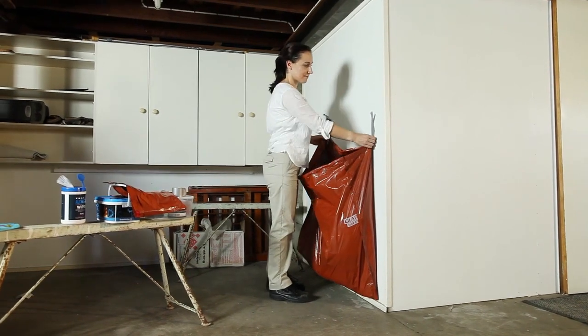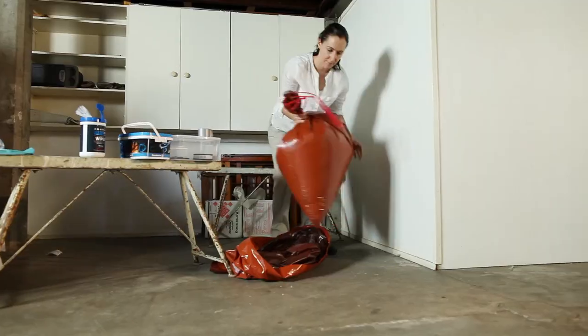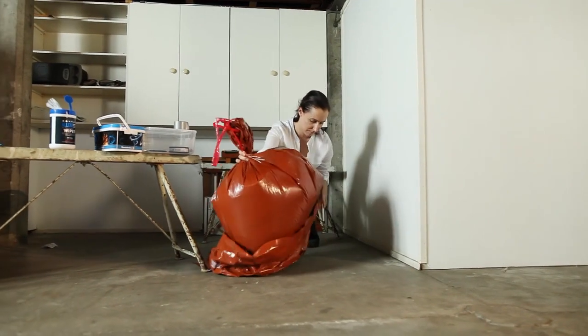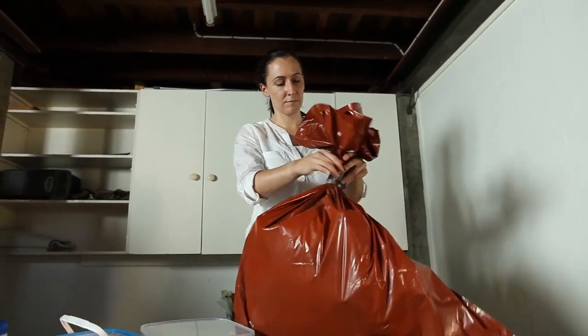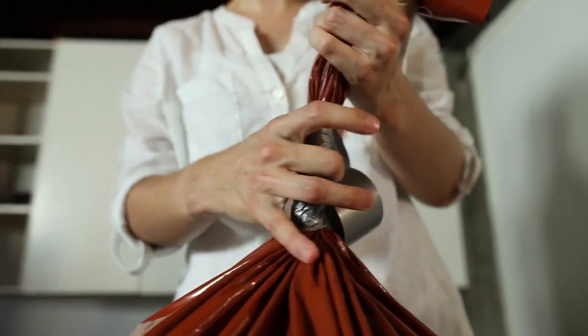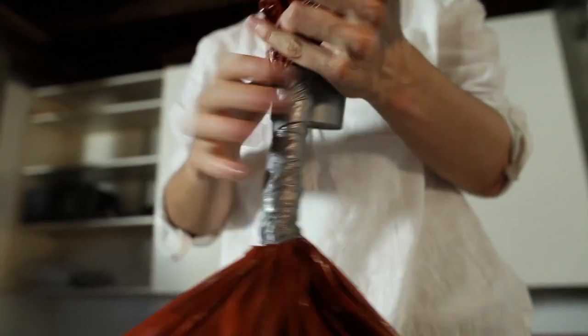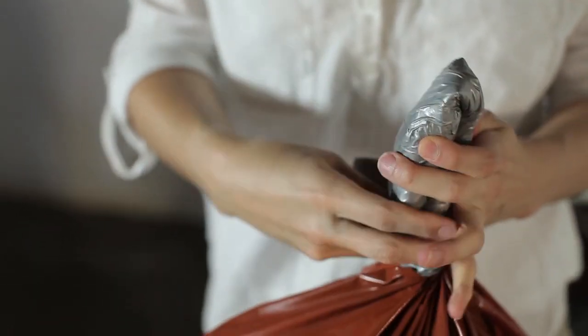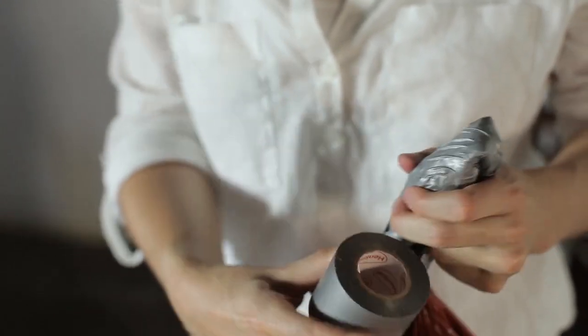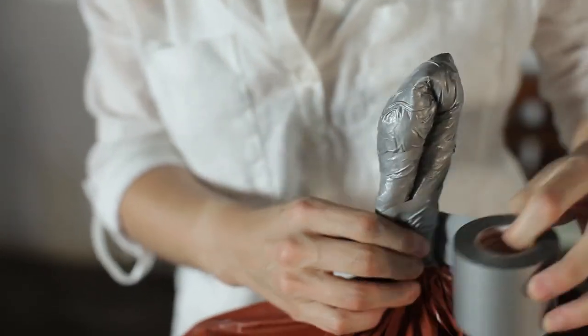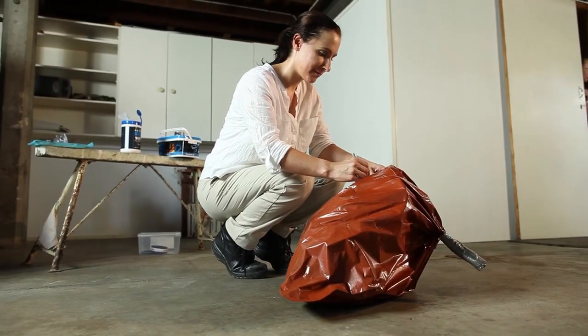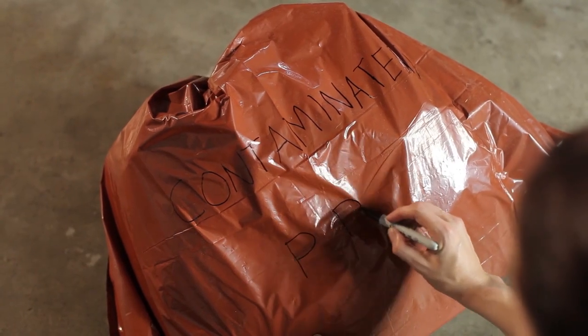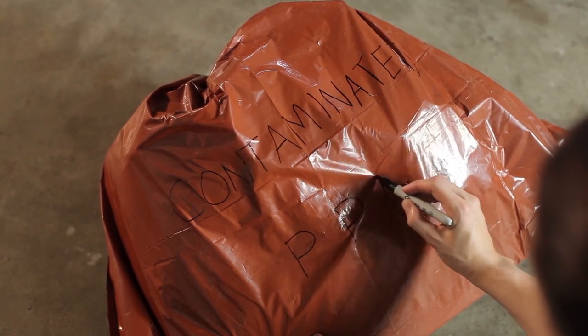When disposing of contaminated PPE, seal the first bag and then place it into a second waste bag. Seal the outer bag via a gooseneck. Hold the bag about one third of the way from the top and while twisting tightly, begin taping the bag using duct tape. Once you have taped to the top of the bag, fold the taped section in half and tape the folded parts together to the top of the fold. Label the outside of the outer bag with the words contaminated PPE. Dispose of the waste according to local council laws and waste sites.